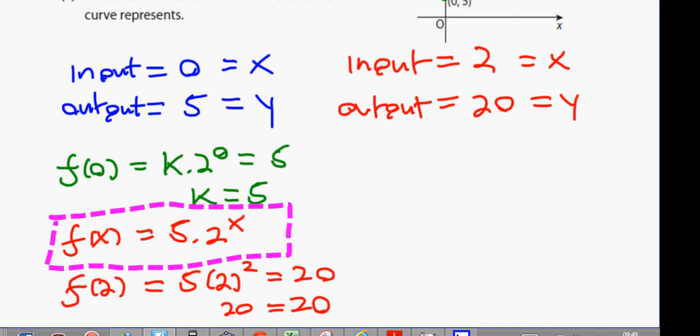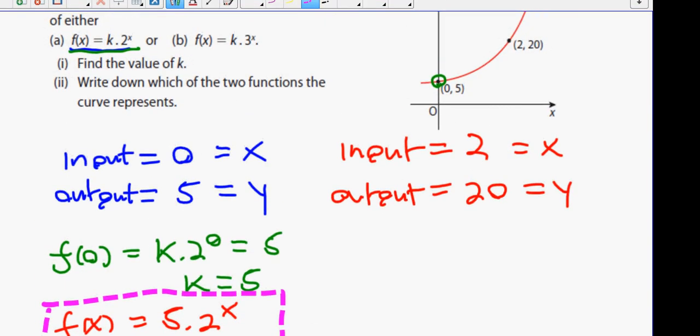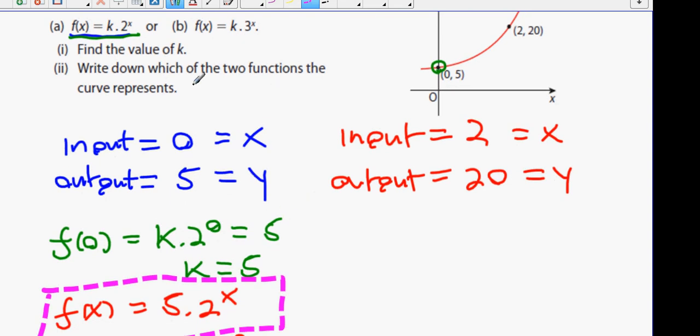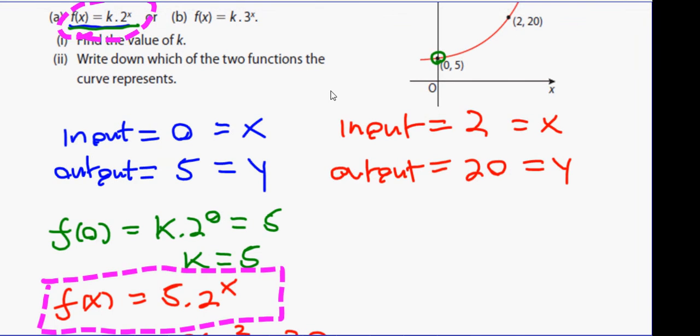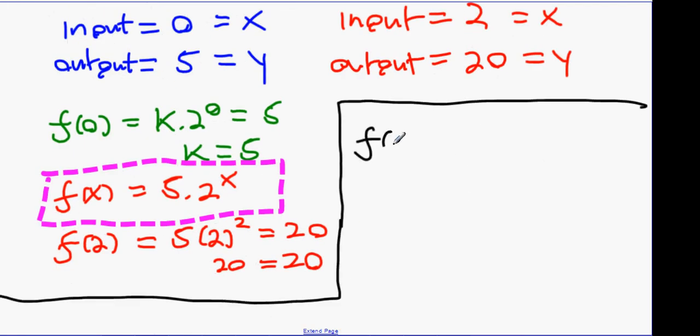Now, what I'm going to do next is find the value of k. I think k is 5. Write down which of the two functions the curve represents. I think it represents k times 2 to the power of x. But I should also eliminate out the other curve, shouldn't I? Using the same methods. So look at this. This time, we're going to say f(x) equals k times 3 to the power of x. That's the other graph up here, right?